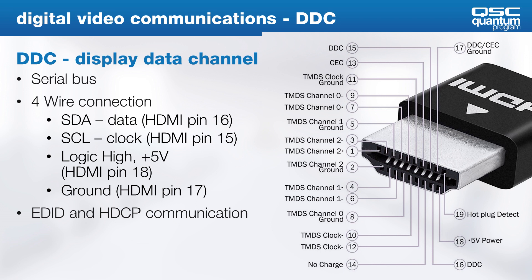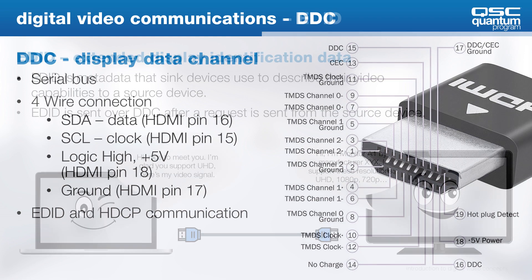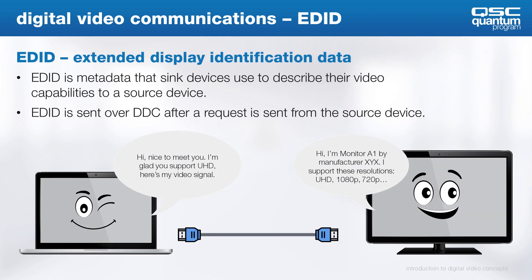Here's where you see the HDMI connector where the DDC is. Pin 15 is for the SCL and pin 16 is for the SDA. EDID, or Extended Display Identification Data, allows the sync to tell the source what it can and can't do. A display basically says it supports these resolutions and frame rates, and then the source will send appropriate video data based on the EDID it reads over the DDC.